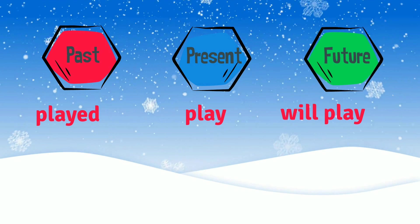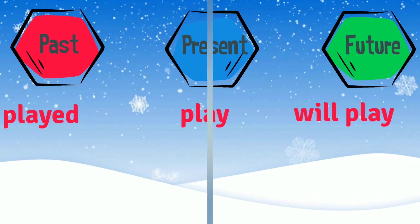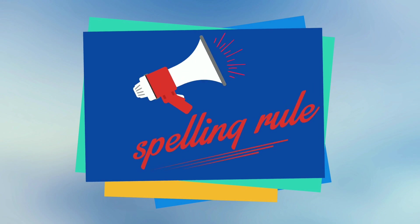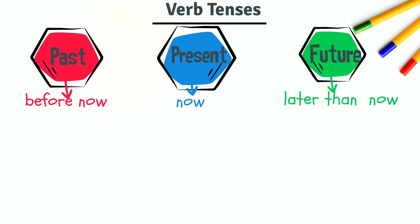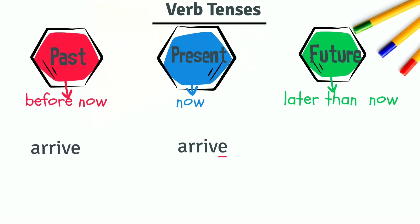Some regular verbs ending in -ED have special spelling rules. When a verb ends in E, just add D. For example, arrive becomes arrived — one E, just add D.